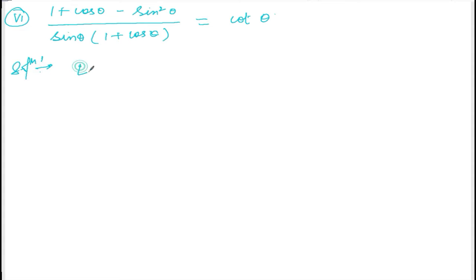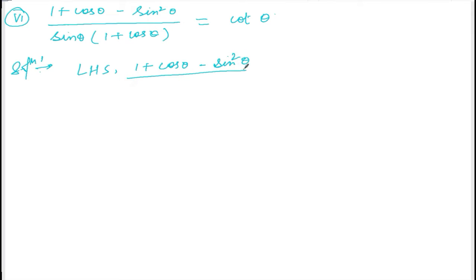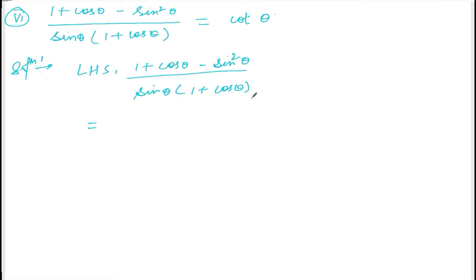Solution: Take the left hand side, which is (1 + cosθ - sin²θ) divided by sinθ(1 + cosθ), and this should equal cotθ.